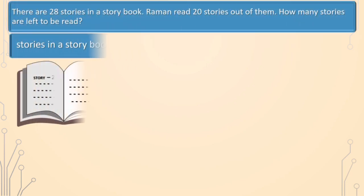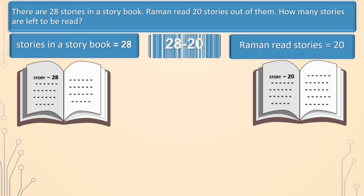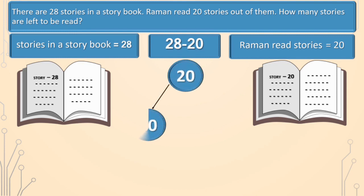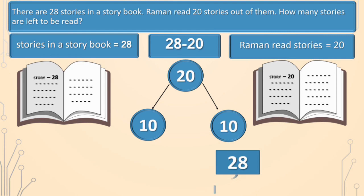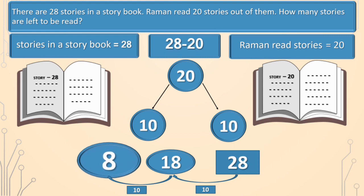Let's look at another method here. Stories in a storybook is equal to 28. Raman read stories is equal to 20. We will find the number of stories left to be read. We will split 20 into 2 parts: 10 and another 10. From 28 stories, Raman read 10, and 18 stories are left. From 18 stories, Raman read another 10. So, 8 stories are left to be read. There are 28 stories, Raman read 20, and 8 stories are left to be read.